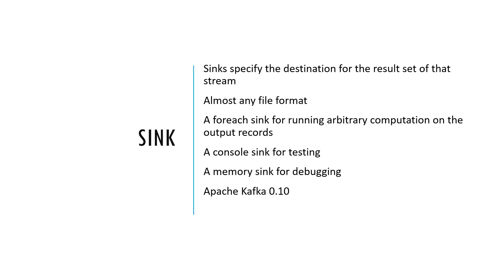Sink is where we are writing the data back. Sinks specify our destination — in the diagram, after receiving input, appending to a table, and processing it, the output or destination is the sink. Sink can be almost any type of file format. It can be a foreach sink where we want to run arbitrary computations on the output records, it can be console, a memory sink for debugging, or Apache Kafka. There are many possibilities for how we output the data.